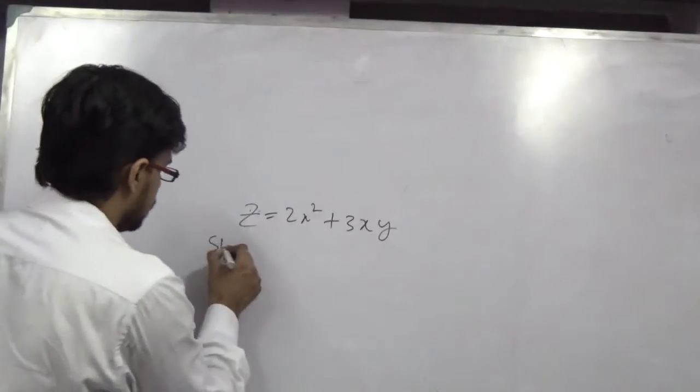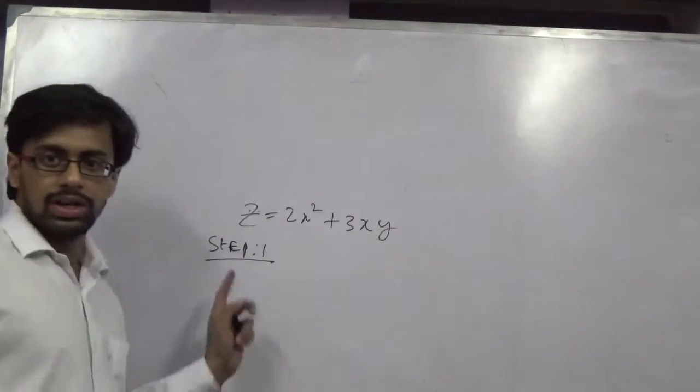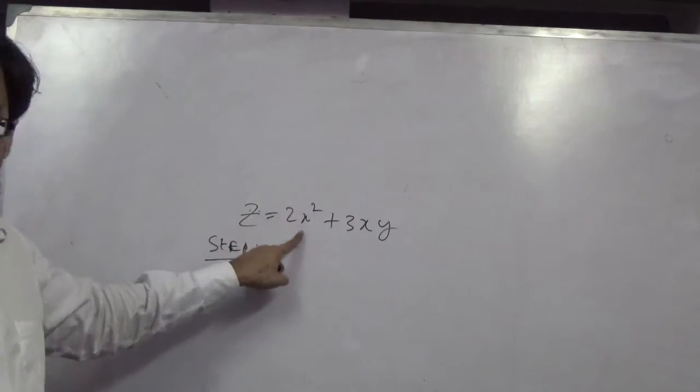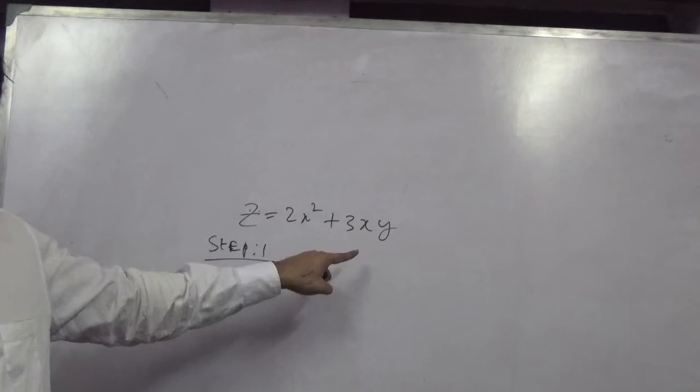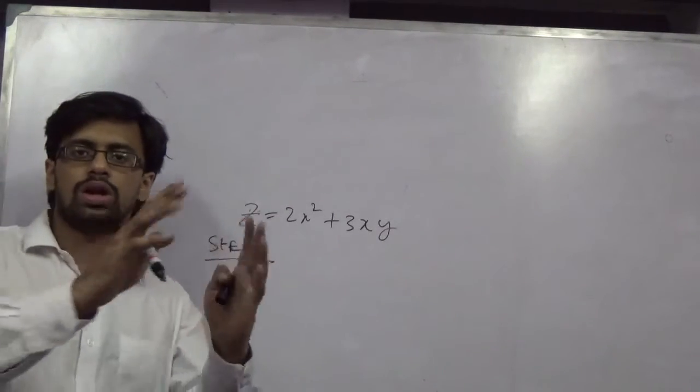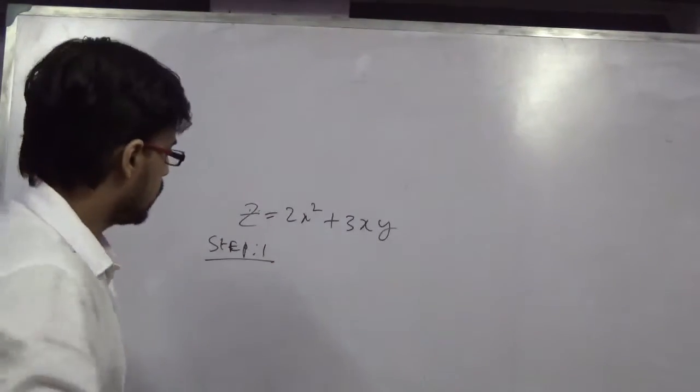Step 1. I always follow a step. Step 1. First, multiply both the variables in the RHS with a particular constant. Let the constant be alpha.